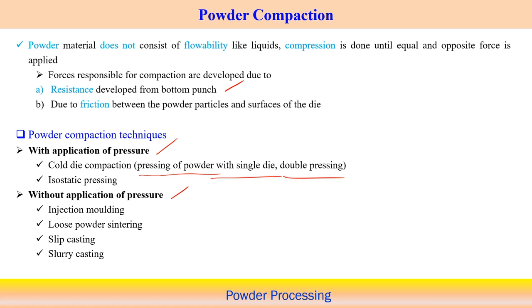Without application of pressure, powder compaction can be done through injection molding operations, loose powder sintering, slip casting, or slurry casting — methods where powders are gathered together without application of any pressure.